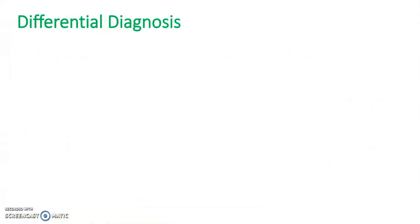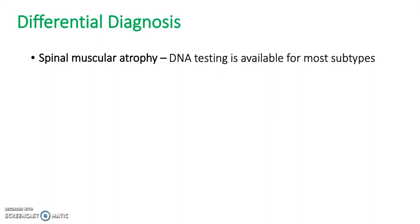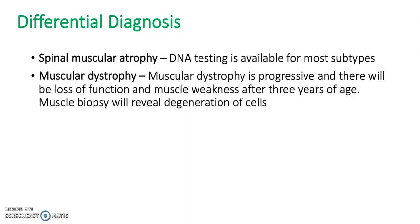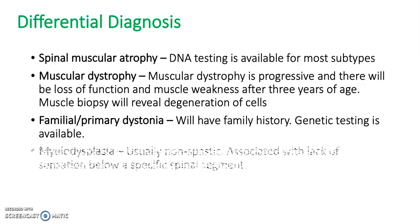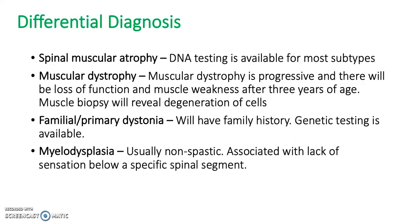What would your differential diagnosis be? Spinal muscular atrophy — DNA testing can differentiate most subtypes. Muscular dystrophy is progressive and there will be a loss of function and muscle weakness after three years of age; a muscle biopsy will reveal degeneration of cells. Familial primary dystonia — the patient will have a family history and genetic testing is available. Myelodysplasia is usually non-spastic and is associated with a lack of sensation below a specific spinal segment.